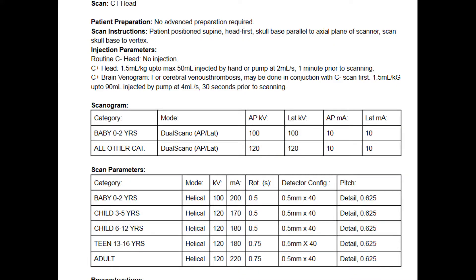We're going to look at this sample CT head protocol, and the first thing you may notice is that we have a selection of different CT brain protocols for different age groups. Most of the protocols in a pediatric setting will vary by weight category, but the head is the one exception here, which we do by age, because that's a better indication of head size.